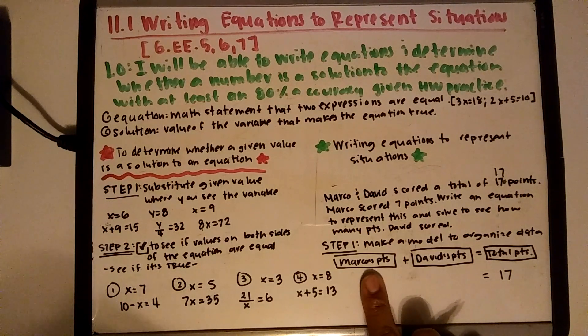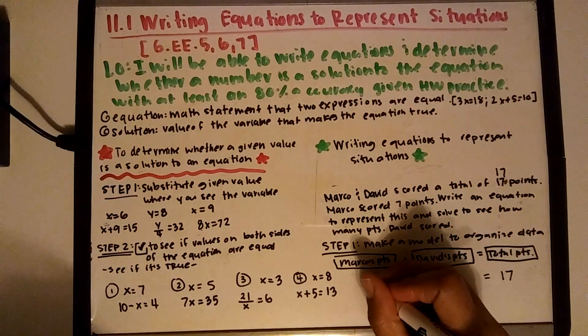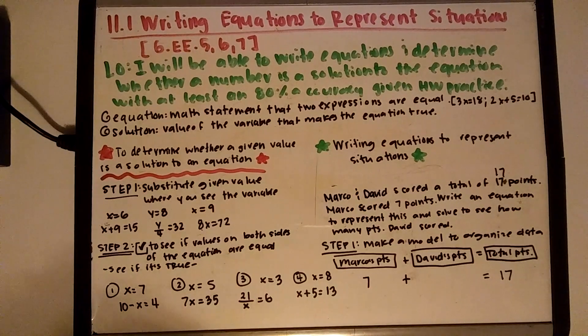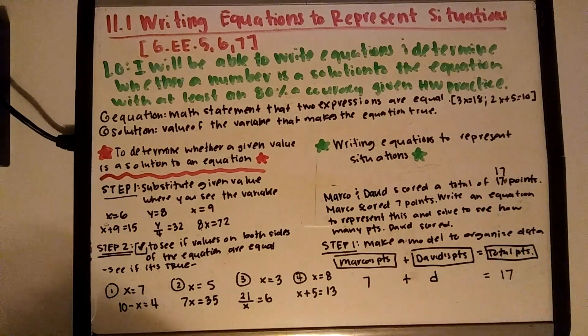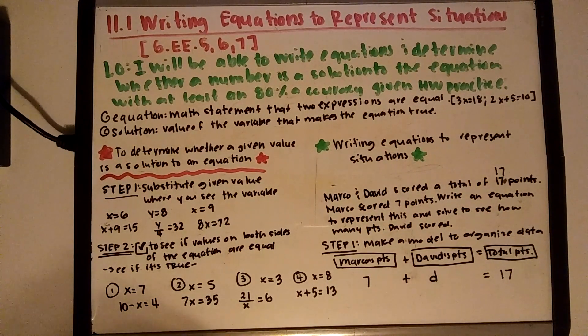We know that Marco scores 7 points, and we don't know how many David scored, so I'm going to use D for David. Okay, so that's my variable that's going to tell me how many points David scored.